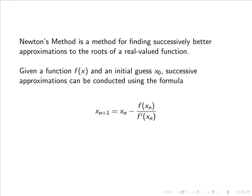Newton's method is a method for finding successively better approximations to the roots of a real valued function. So given a function f of x and an initial guess x0, successive approximations can be conducted using the formula xn plus 1 equals xn minus f of xn over f dash of xn, where n is the current iteration.